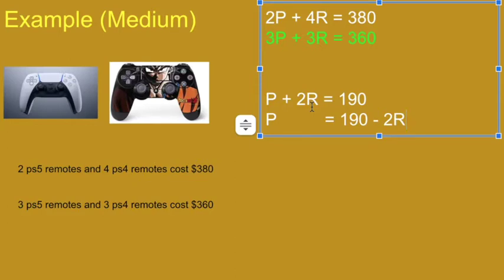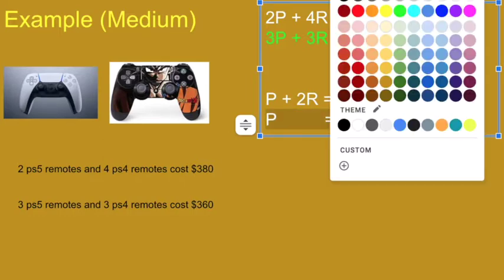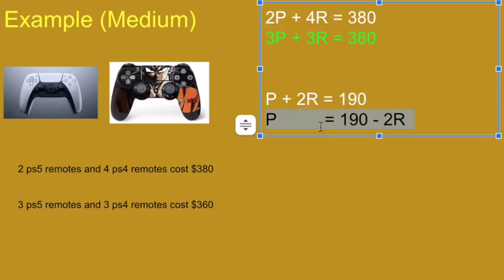P is the same as 190 dollars minus two of those remotes. Maybe I will, just might as well finish it. So this time, replacing P.